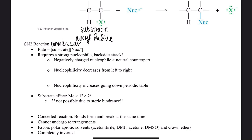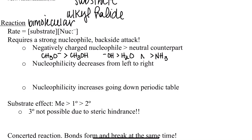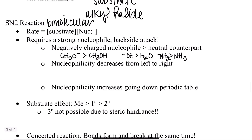What makes a nucleophile strong, moderate, or weak? A negatively charged nucleophile will be stronger than its neutral counterpart. For example, the methoxy ion CH₃O⁻ is stronger than methanol, and hydroxide ion is stronger than water. Similarly, NH₂⁻ is stronger than NH₃. Anytime you see a negative charge, that's going to be a relatively stronger nucleophile.